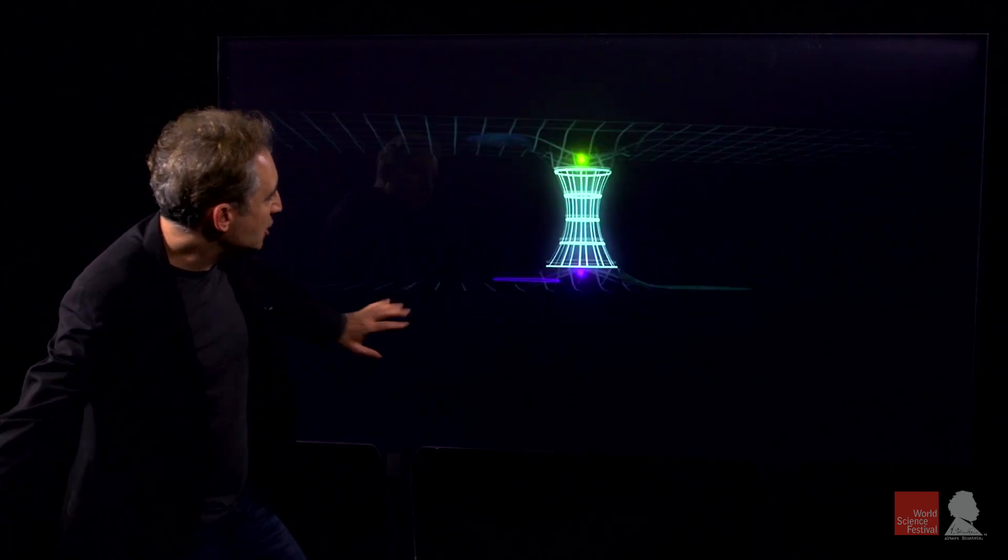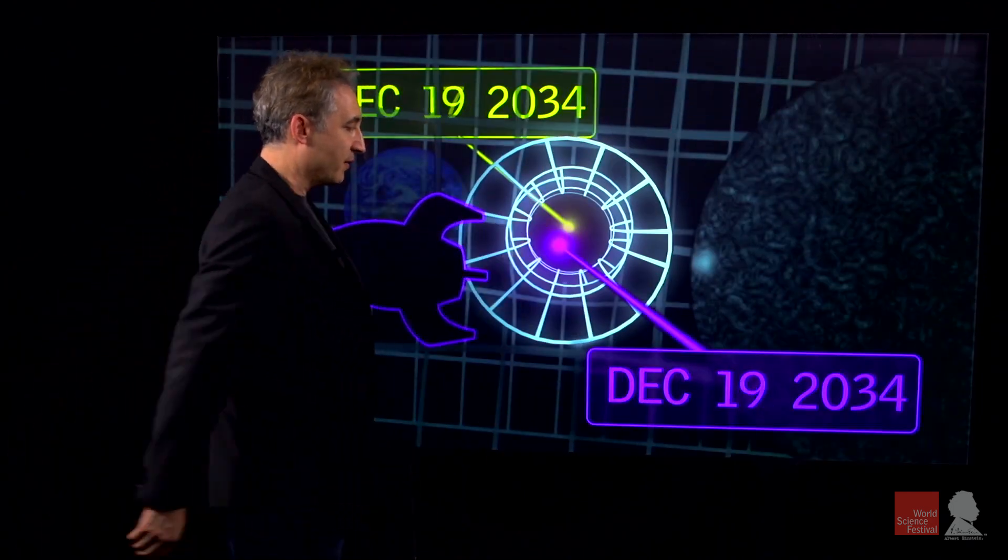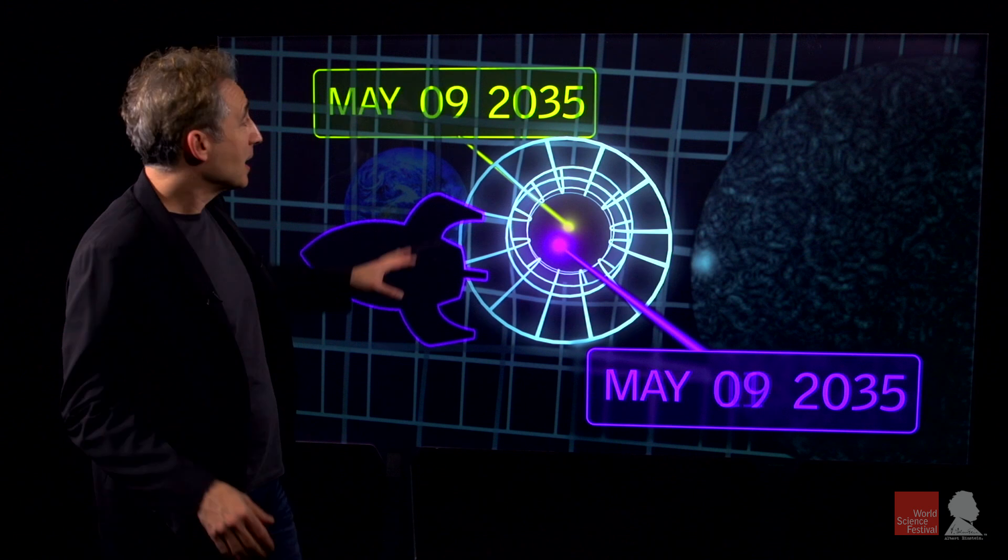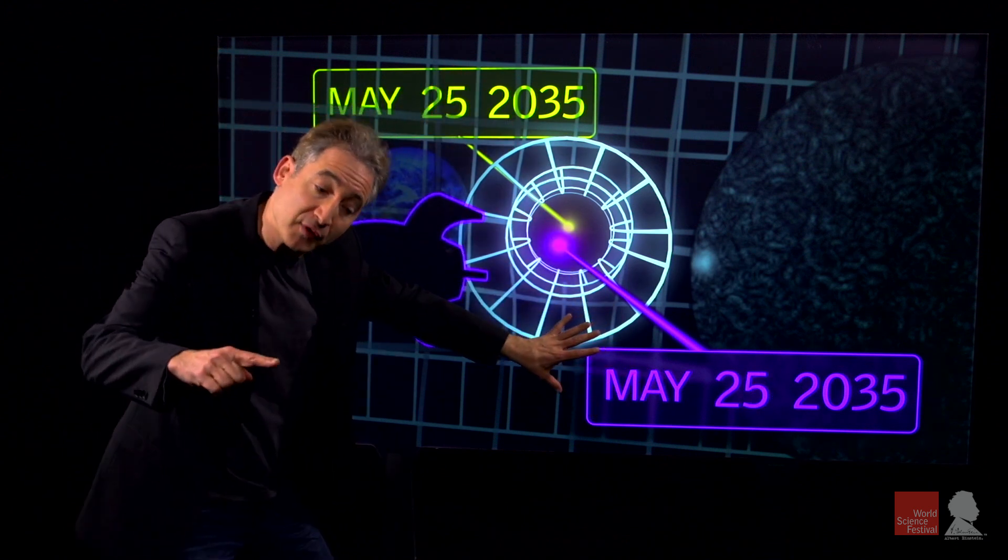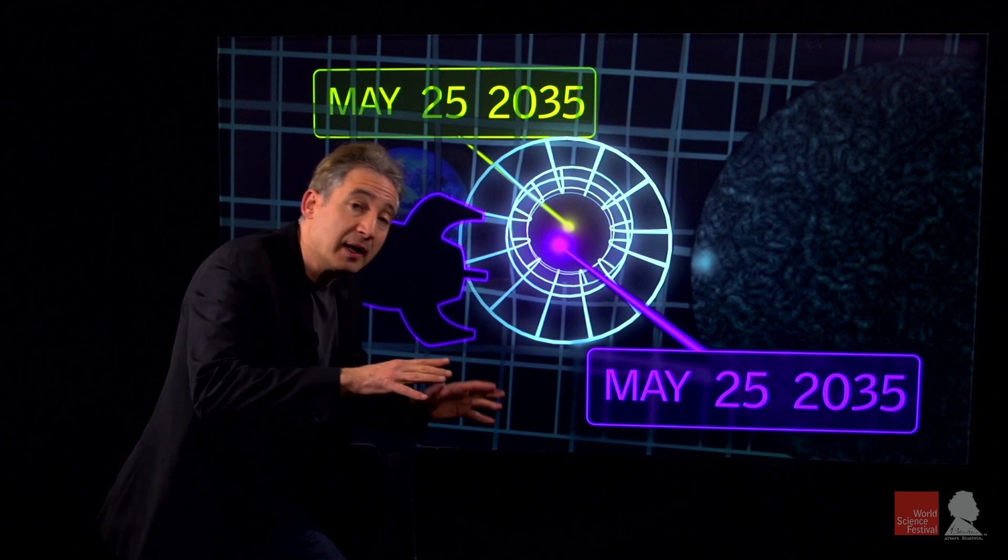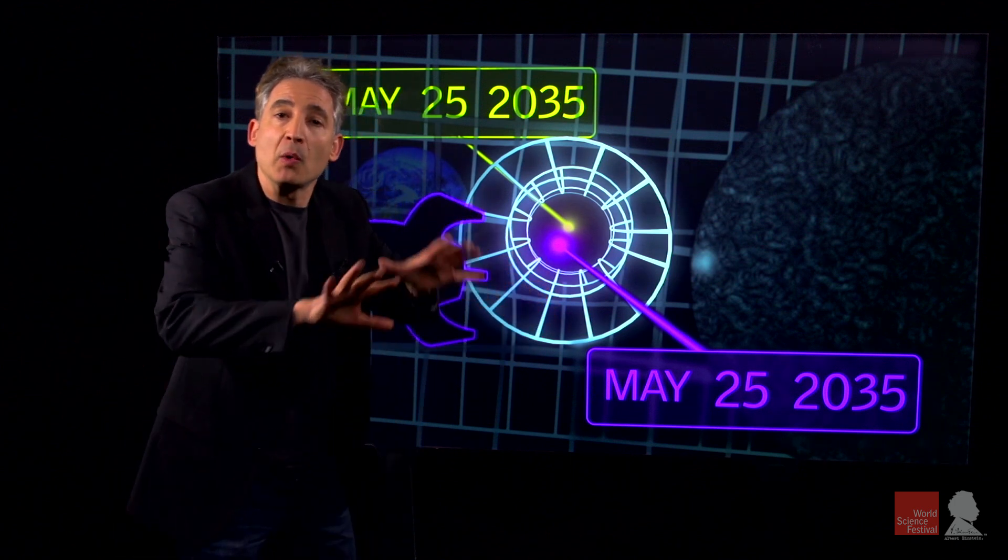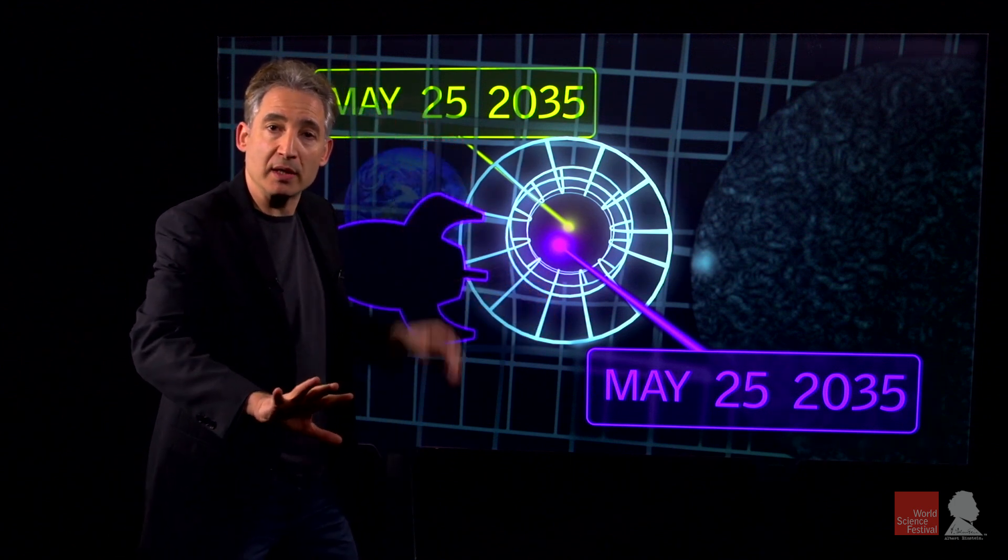But now what we're going to do, as I mentioned, is look through the wormhole itself. And the math shows that the two clocks at each opening of the wormhole, when viewed through the wormhole itself, agree with one another. There is no time difference between them.